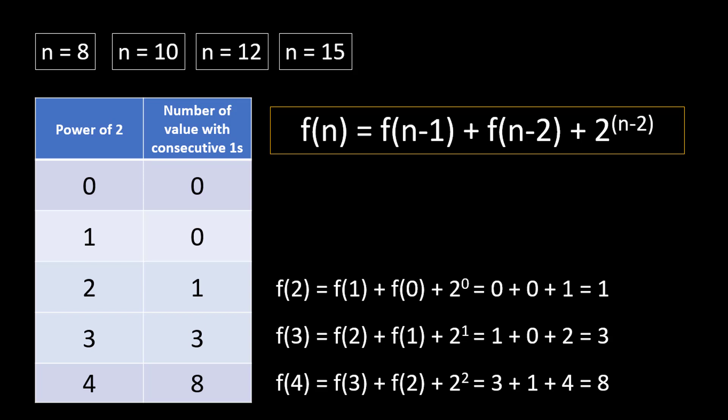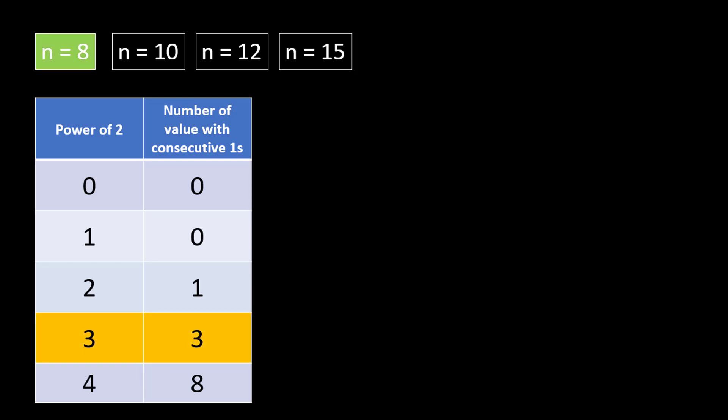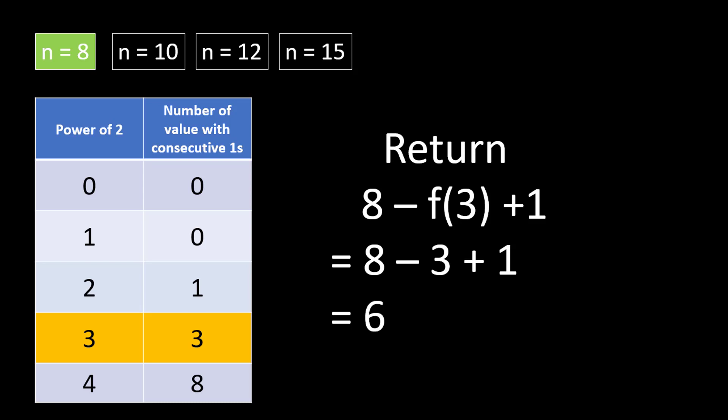This formula works for powers of 2, but the question asks for any number between 0 and 10^9. Knowing the number of consecutive ones makes it easy to find values without consecutive ones. For the first query, n = 8 is directly 2^3, so we return f(3) = 3. The answer is 8 minus 3 plus 1, which equals 6. We add plus 1 to account for 0.